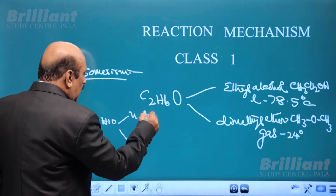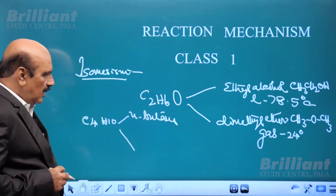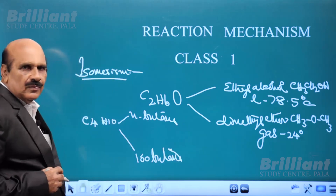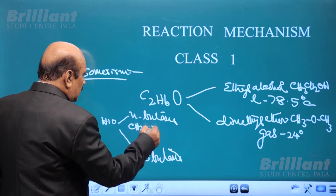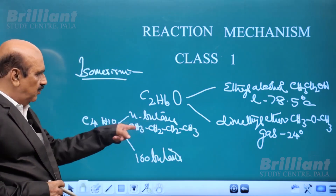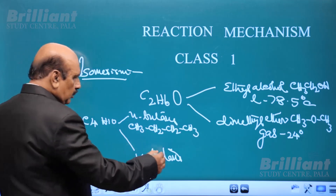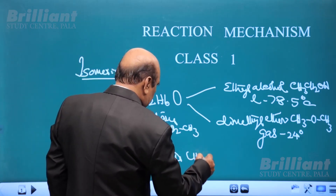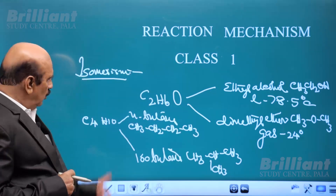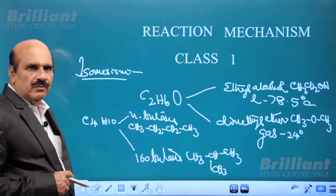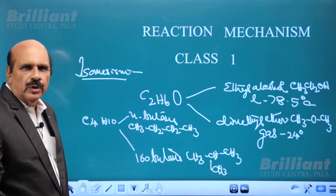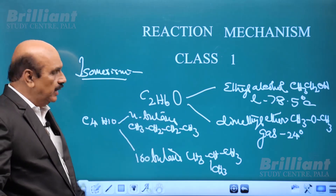One is normal butane and the other is isobutane. Normal butane has a straight chain of four carbon atoms, whereas isobutane has a side chain also. Even though the molecular formula is the same, these two compounds are completely different. Isobutane has a lower boiling point — branched hydrocarbons will have comparatively lower boiling points. So normal butane and isobutane are also isomers.